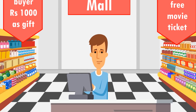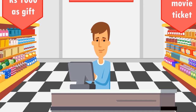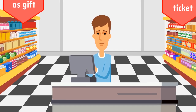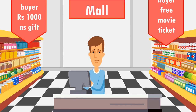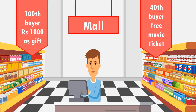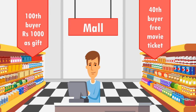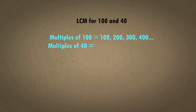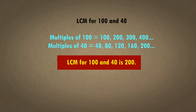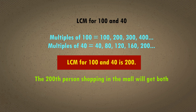A shopping mall gave every hundredth buyer ₹1000 as a gift and every fortieth buyer a movie ticket. How many people will go through before one person gets both the money and the movie ticket as gifts? We are figuring out the least time when both events occur for the same person, so we will use LCM. Multiples of 100: 100, 200, 300, 400, and so on. Multiples of 40: 40, 80, 120, 160, 200, and so on. The LCM of 100 and 40 is 200. So, the 200th person shopping in the mall will get both ₹1000 and a movie ticket as gifts.